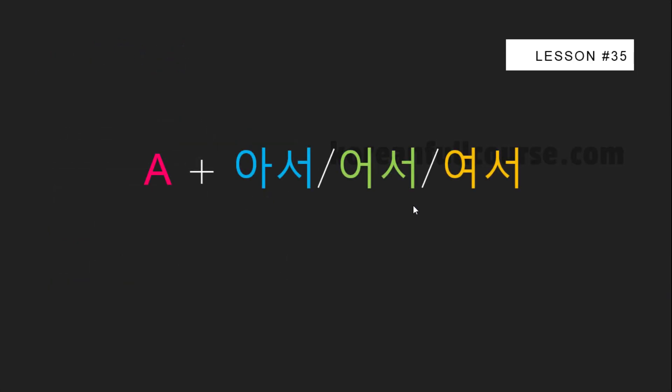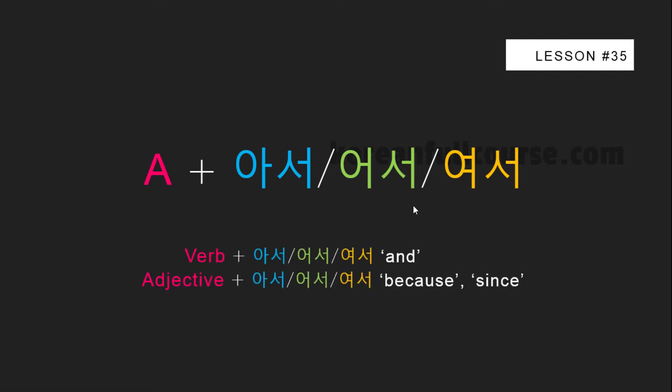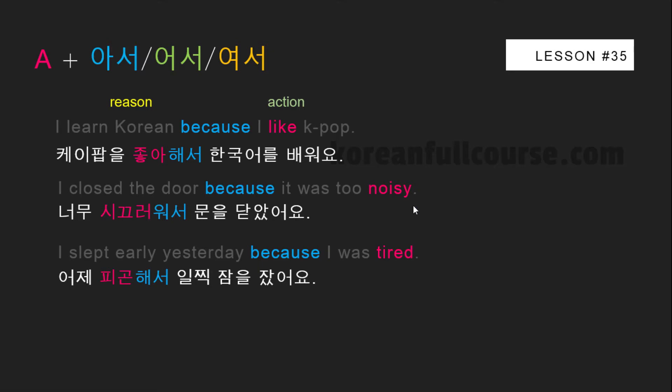Here is another way to explain a reason in Korean. We have already learned this grammatical construction in lesson number 28, where I explained how to use the conjunction AND. As you remember, 아서, 어서, and 여서 can only be used with verbs when meaning AND, but if you use them with adjectives, they will mean BECAUSE or SINCE. If you're new to my channel, head over to lesson number 28. Same as 니까 and 으니까, when you build sentences using this construction, a reason should go first and the action comes after.